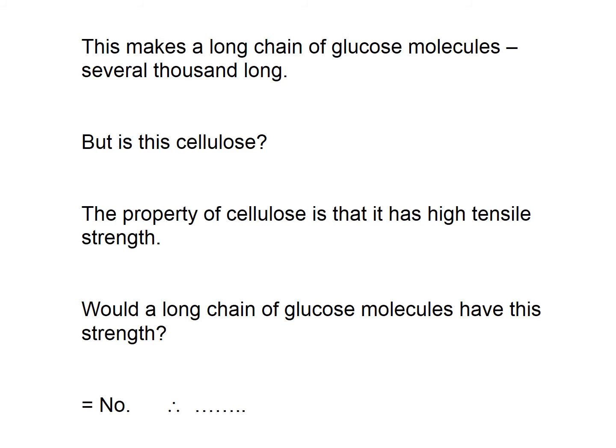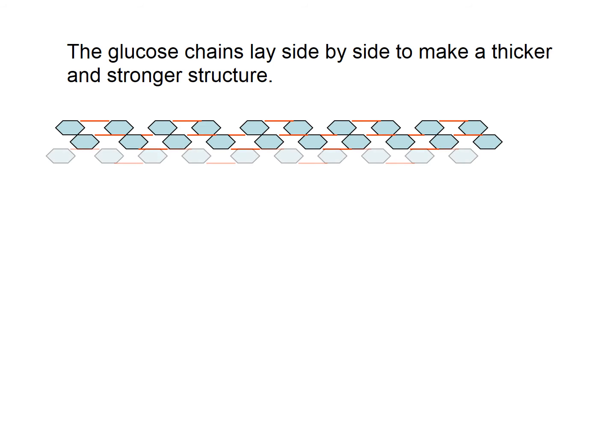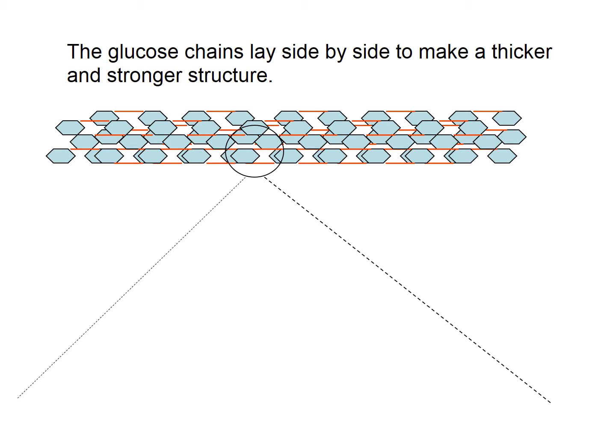So what they do is end up laying side by side to make a much thicker, stronger structure. The glucose molecules, about 60 to 70 of these polysaccharide chains, will lay up side by side. They would fall apart, they would break away from each other if it wasn't for the fact that you have lots of OH groups sticking out from the glucose molecules.